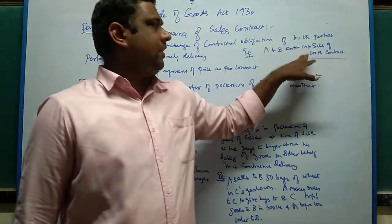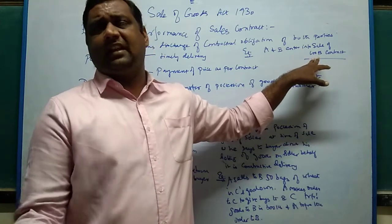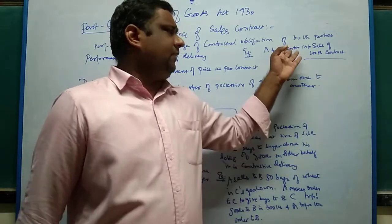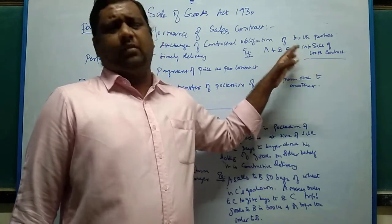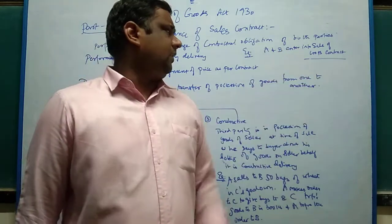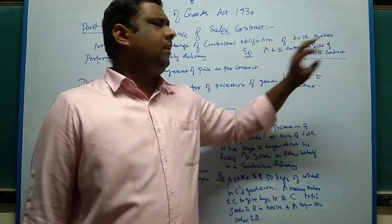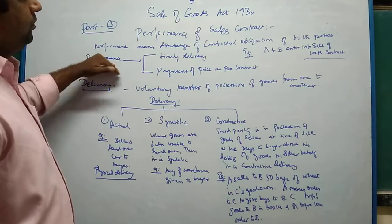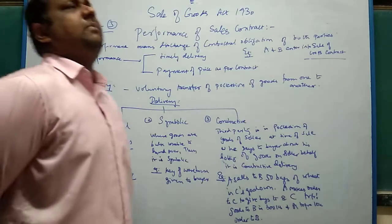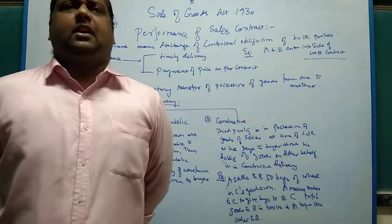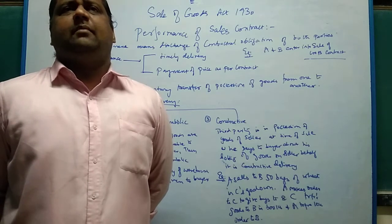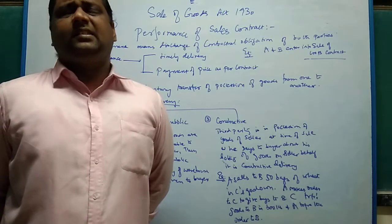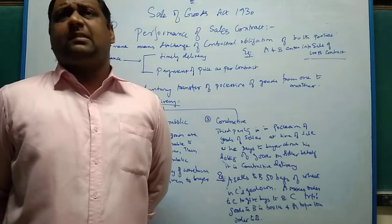For example, A and B enter into a sales contract for sale of agricultural crops — wheat, rice, etc. What A is supposed to do is make a timely delivery. Timely delivery means when A agrees in the contract that delivery of the goods will be made on Wednesday morning 11 o'clock, it has to be delivered at that time because it is the promise made by the seller as part of the sales contract. The buyer will be anticipating delivery on Wednesday morning 11 o'clock. But the seller takes his own time and delivers only on Thursday or Friday, and he is not fulfilling the promise.